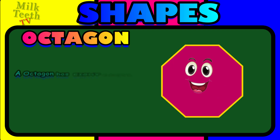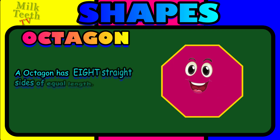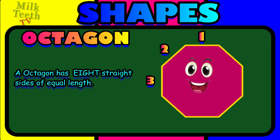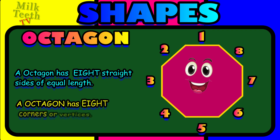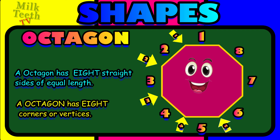An octagon has eight straight sides of equal length: one, two, three, four, five, six, seven and eight. An octagon has eight corners or vertices: one, two, three, four, five, six, seven and eight.